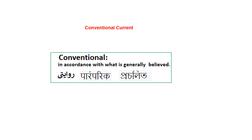Before we go further, it's a good idea to understand the meaning of conventional current, or the meaning of the word 'conventional.' In English, it means 'in accordance with what is generally believed.' So anything that is generally believed is called conventional. In Urdu, we call it Ravayati. In Hindi, it is called Parampariya or Paramparik. And in Bengali, it is called Prochalito.